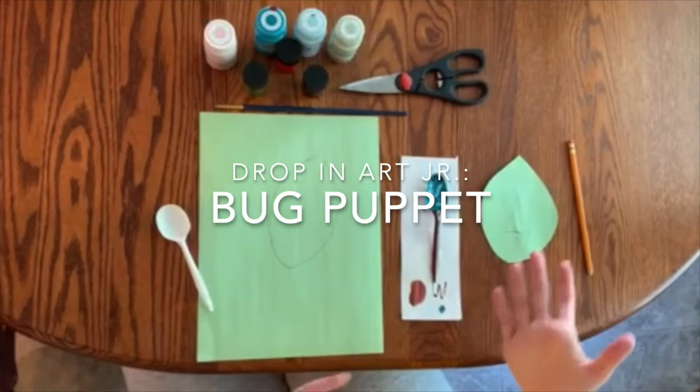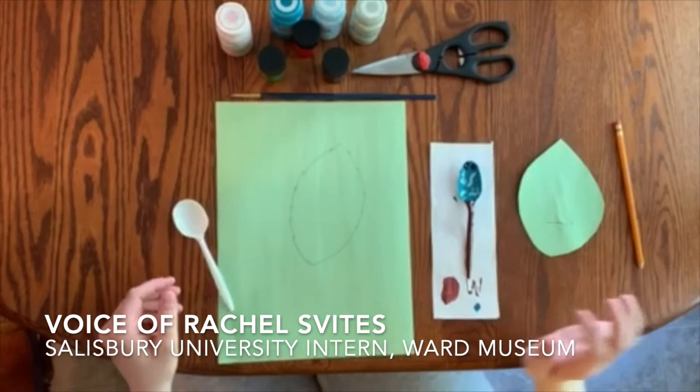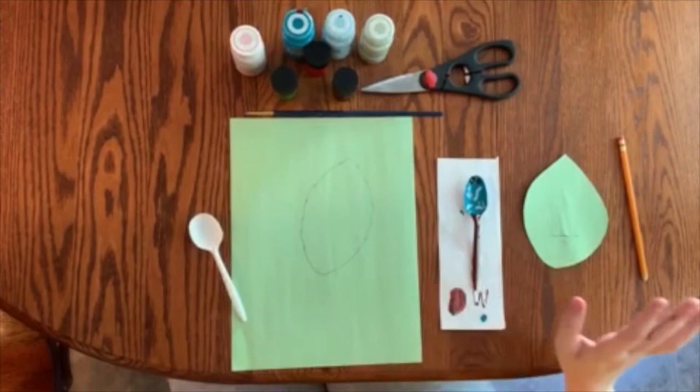Okay hello, I'm going to show you guys how to make a bug on a leaf using common household items you'll find around your house. First, you're going to need construction paper, any color, any kind.